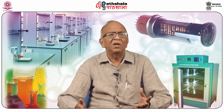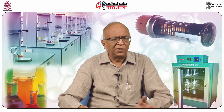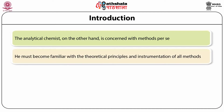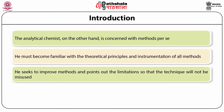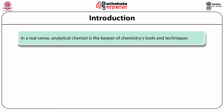Different types of methods are available. In classical methods we have volumetric and gravimetric analysis, and in instrumental methods we have a number of instruments. The analytical chemist is concerned with different methods of analysis and must be familiar with the theoretical principles and instrumentation of all methods. He seeks to improve methods, searches for new areas of application, and points out limitations so that the technique will not be misused. Accuracy, precision, reproducibility, and reliability are everyday words an analytical chemist uses. In a real sense, the analytical chemist is the keeper of chemistry's tools and techniques.